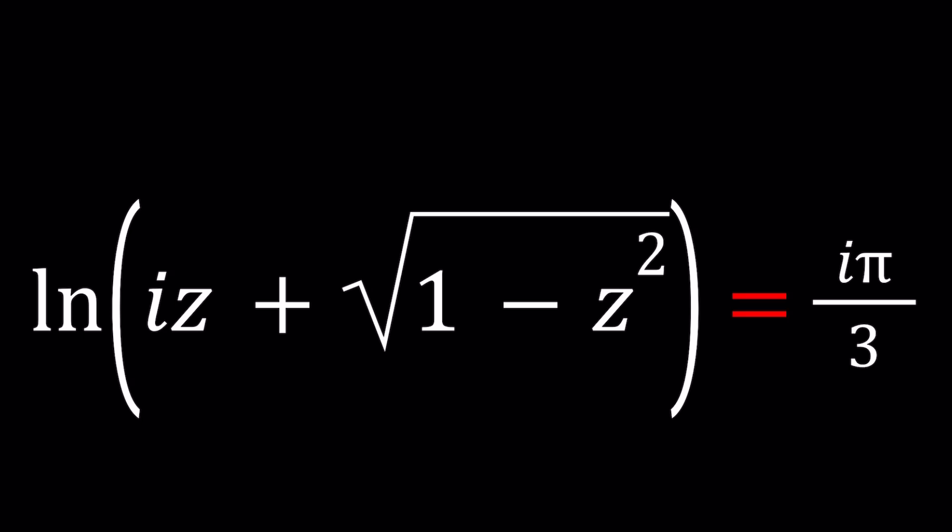We have ln on one side and then iπ/3 on the other side. Basically have ln of iz plus the square root of 1 minus z squared equals iπ/3 and we're going to be solving for z.